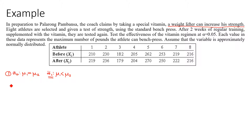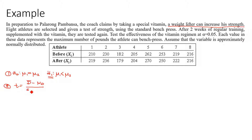For step two, we compute the t value. The formula is t equals d-bar minus mu, all over s sub d divided by the square root of n. Let's take this to Excel.